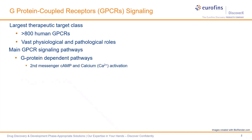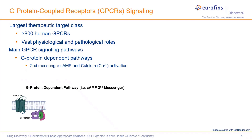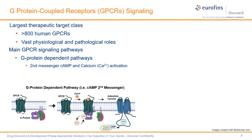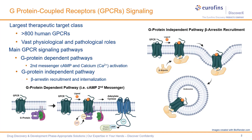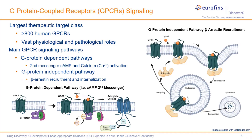GPCRs signal through two main pathways: a G-protein-dependent pathway, where a ligand binding to the GPCR leads to the accumulation of second messengers like cyclic AMP or calcium. Or a G-protein-independent pathway, where ligand binding leads to beta-arrestin recruitment, receptor internalization, followed by GPCR recycling and degradation.